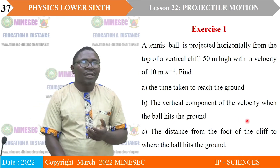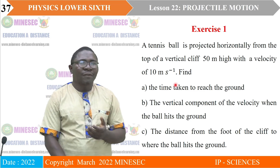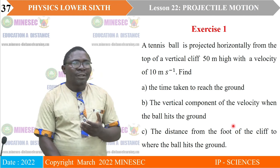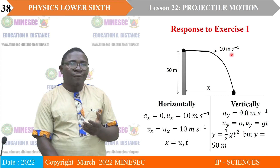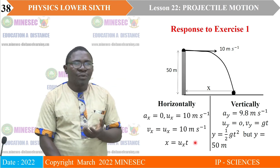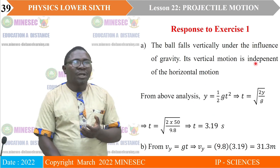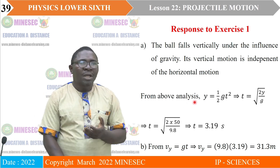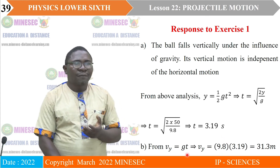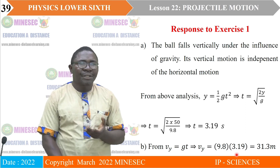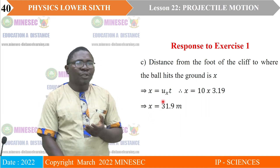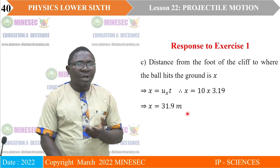Exercise 1: a tennis ball is projected horizontally from the top of a vertical cliff of given height with a velocity of 10 m/s. Find: (a) the time to reach the ground, (b) the vertical component of velocity when the ball hits the ground, and (c) the distance from the foot of the cliff to where it lands. Applying the equations — ax equals zero, ux equals 10 — the ball falls vertically under gravity. The time gives t equals 3.19 seconds, the vertical velocity gives 31.3 m/s, and the horizontal range gives 31.9 meters.